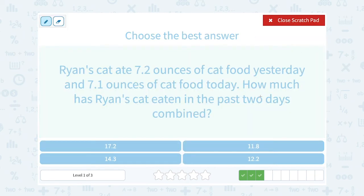Well, if we want to know how much he ate in the two days combined, we would need to add those two numbers together. So we're going to say, okay, well the first day he ate 7.2 ounces, plus on the second day he ate 7.1 ounces. So we're going to add to figure out his total for the two days.